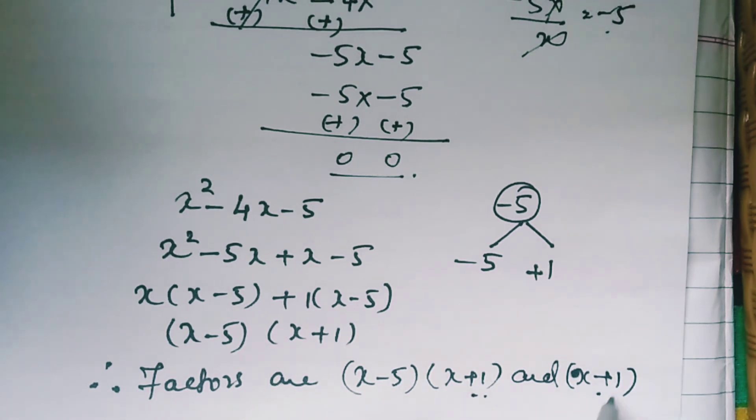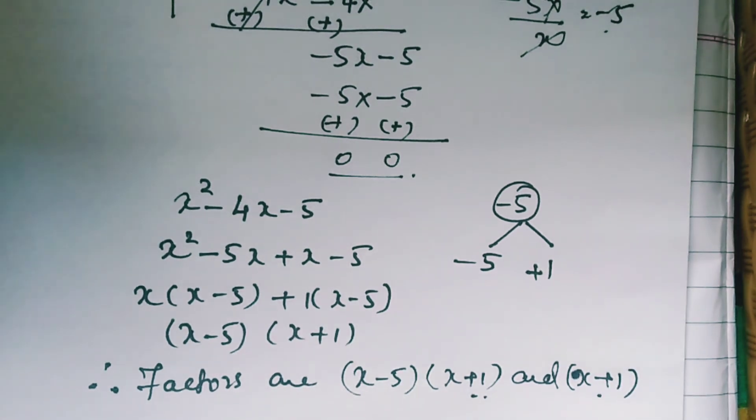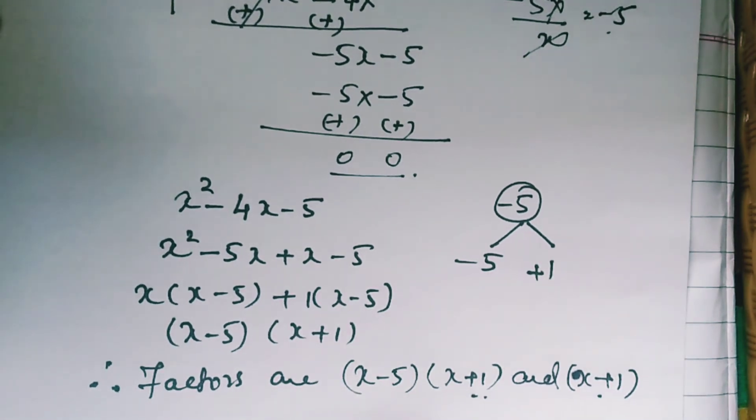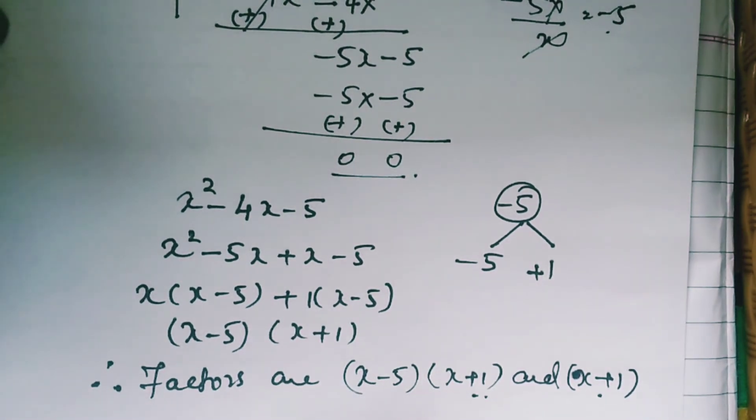Since x plus 1 is repeated twice, you can also write the final factorization as x minus 5 times x plus 1 whole square.